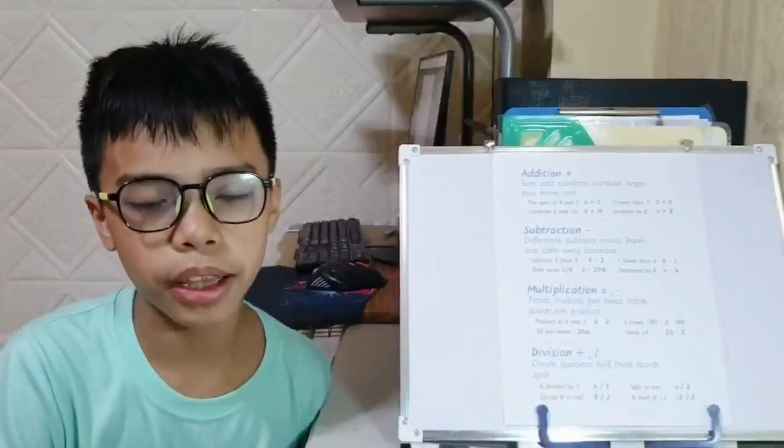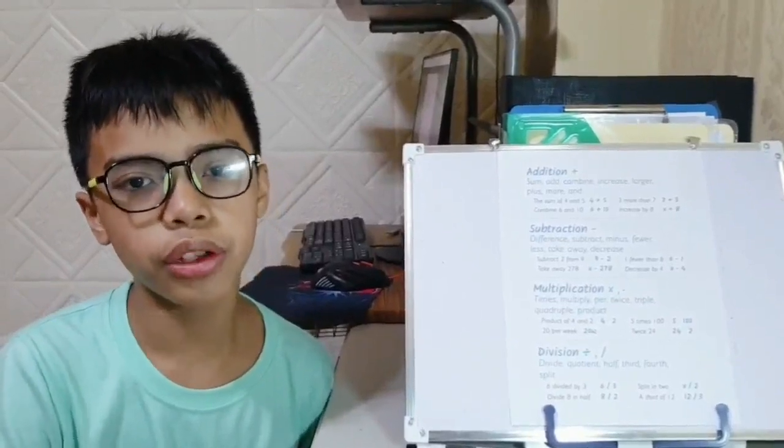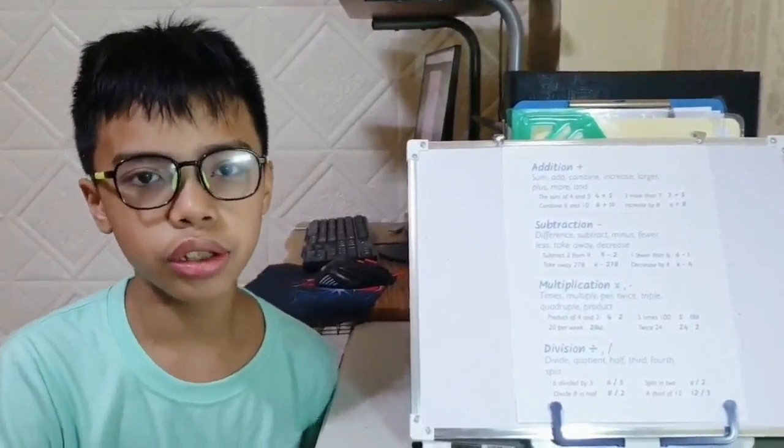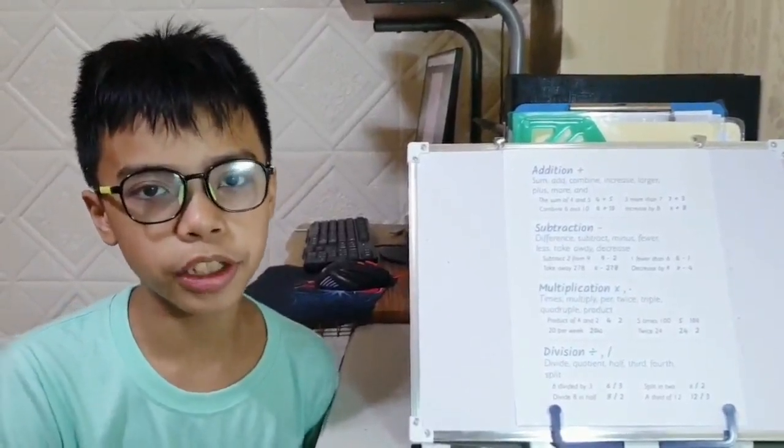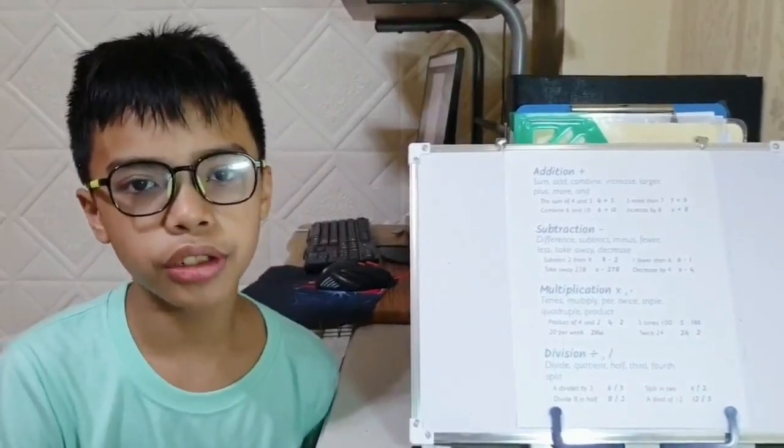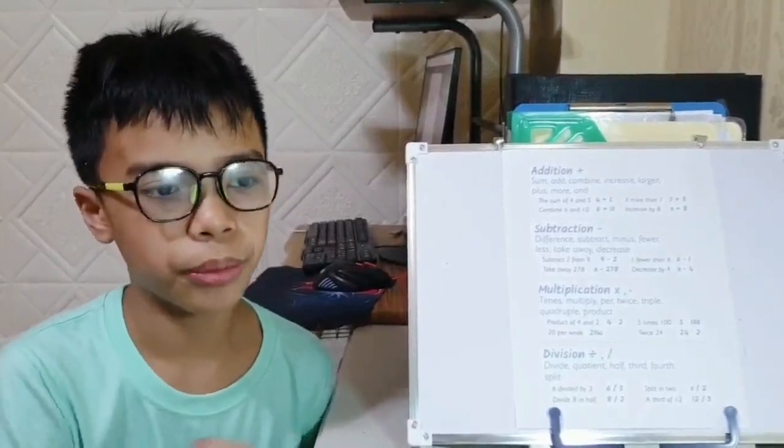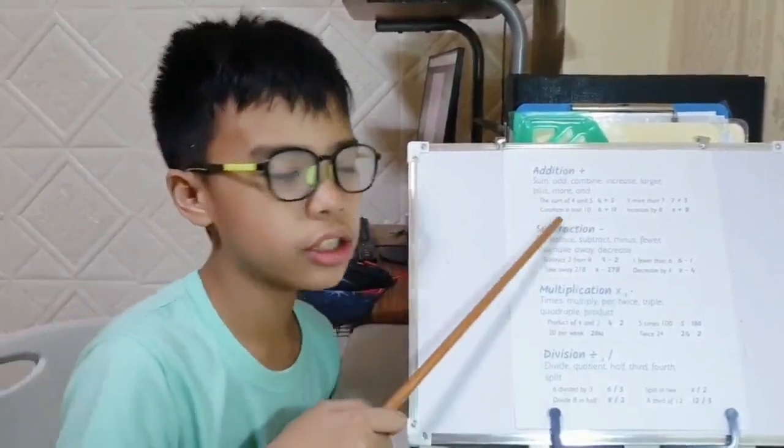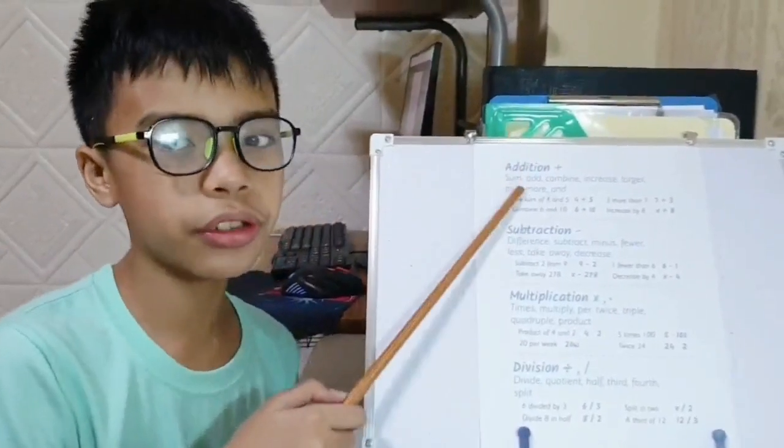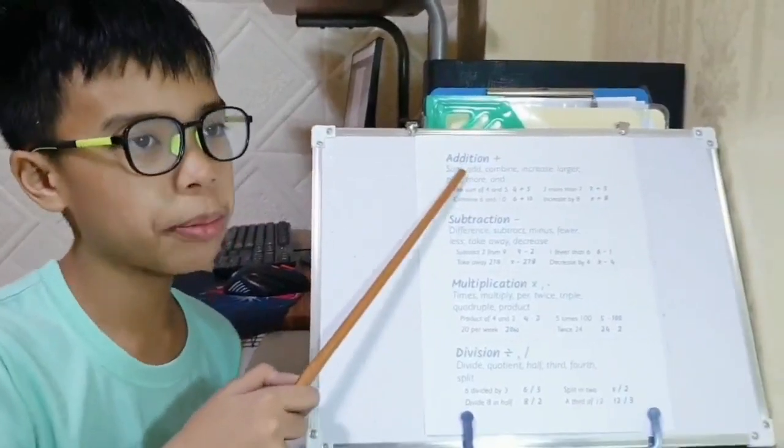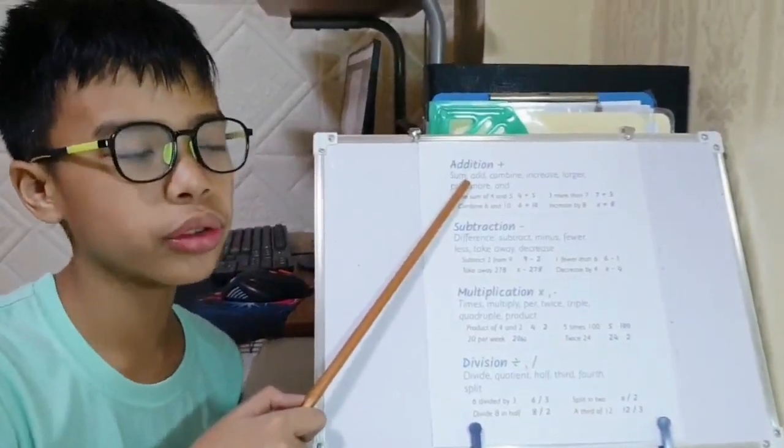Sometimes in math, we describe an expression with a phrase. They're also called writing algebraic expressions and equations. For example, the phrase 'two more than five' can be written as 5 plus 2. So I downloaded some keywords from the internet that might help us know what operation we're going to use.